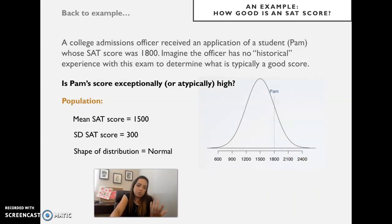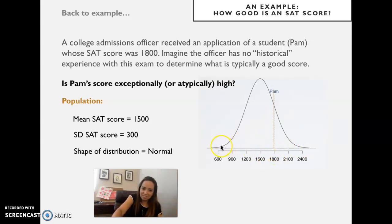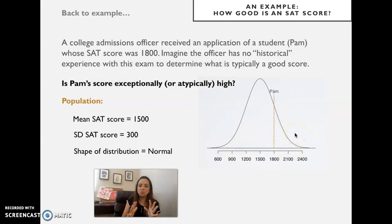What we want to know is the probability of getting her score or higher. The percentile considers the score and lower, but now I need to look at the other side of the distribution — the upper tail.